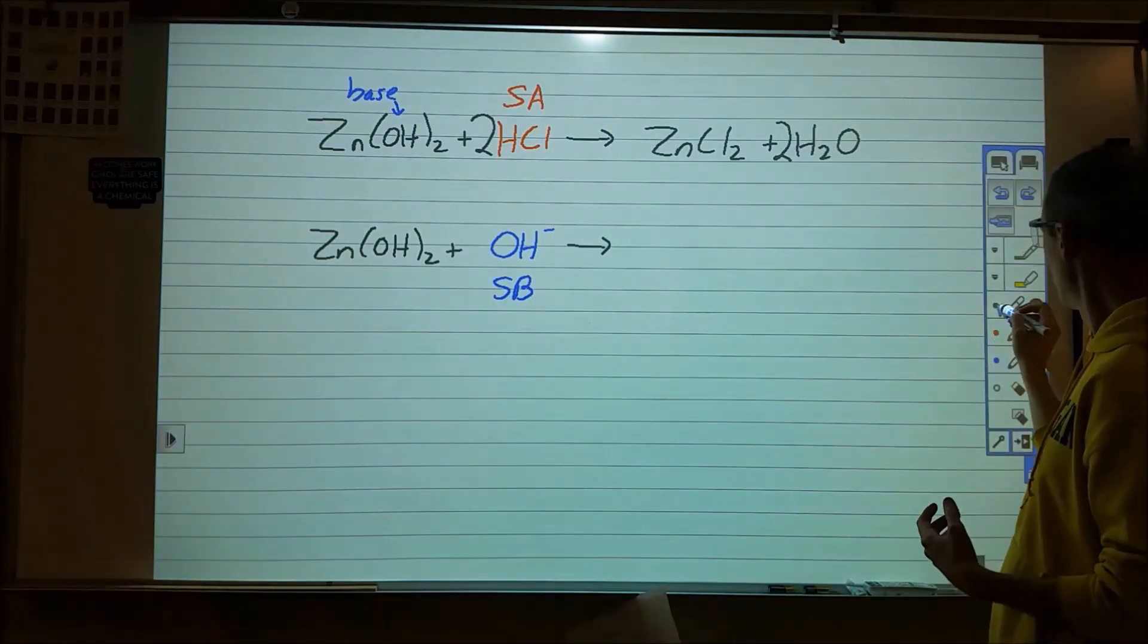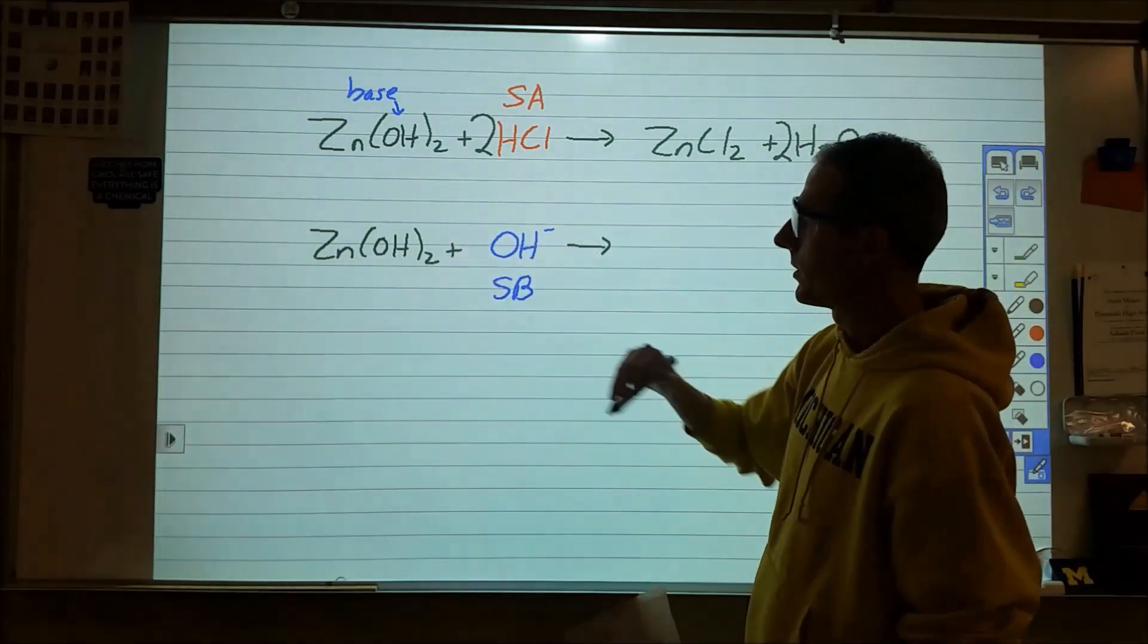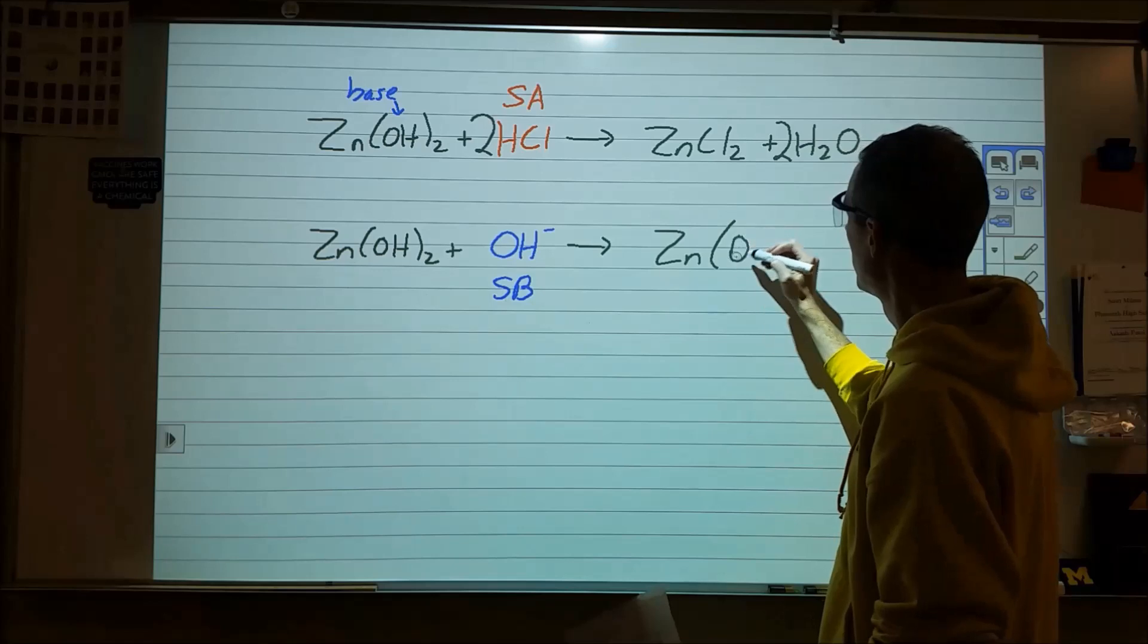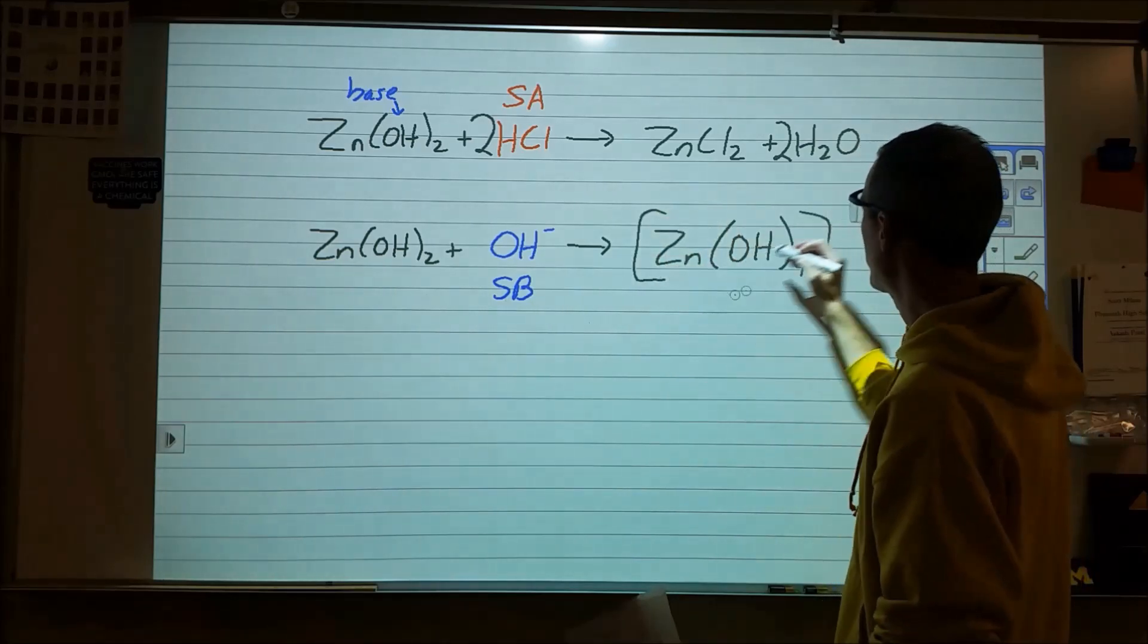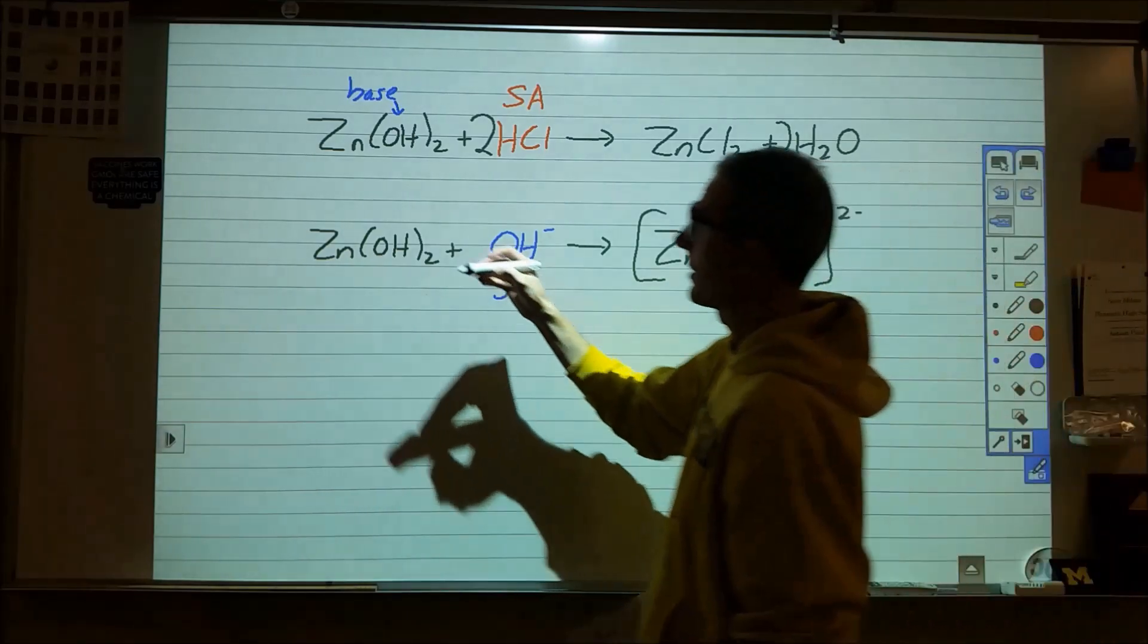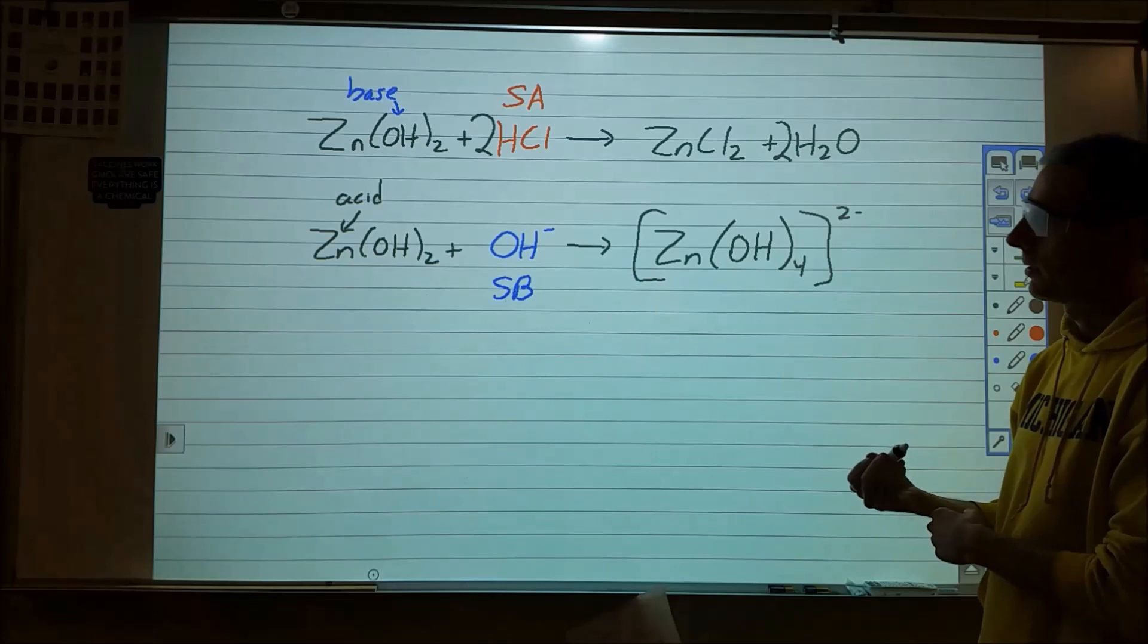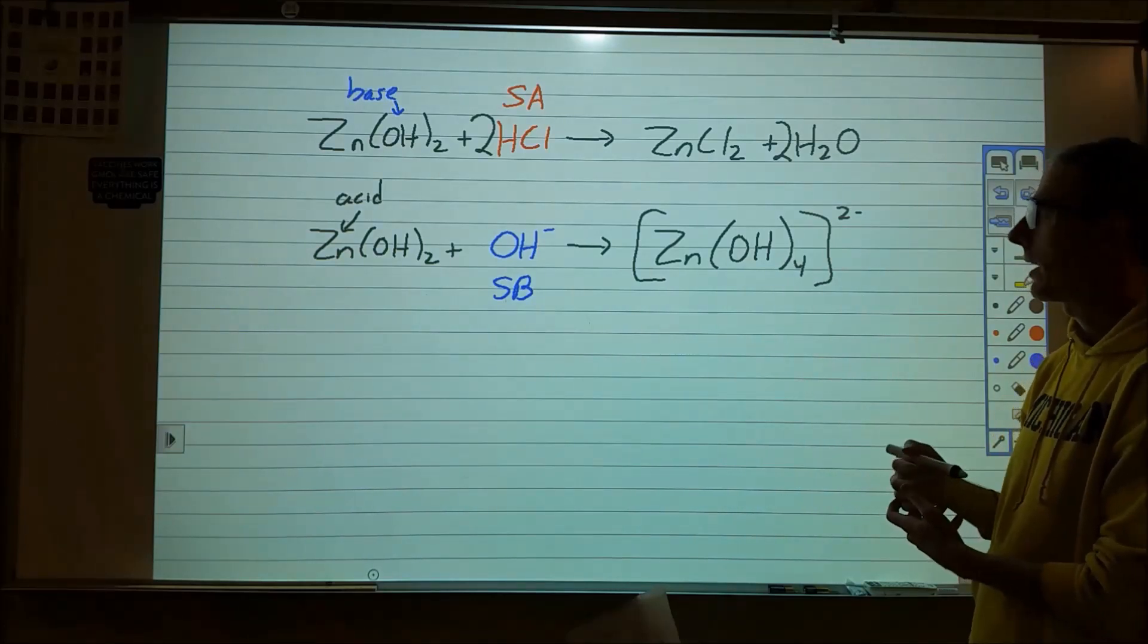However, in the second situation, we have the strong base reacting with the zinc hydroxide, which would imply then that that's acting as an acid. So if we look at what's actually happening there, we're forming a complex ion where those excess hydroxide ions actually surround the zinc ion in a Lewis acid-base reaction where the zinc is acting as an acid. And so therefore, the zinc component of this allows us to act as a Lewis acid. The base component allows it to act as a Lewis base or as a Bronsted-Lowry base.